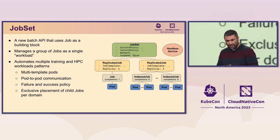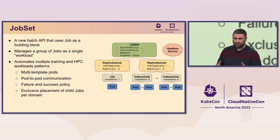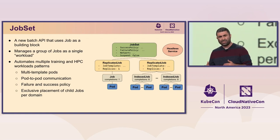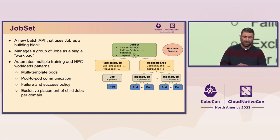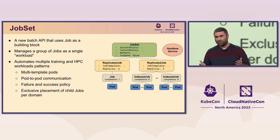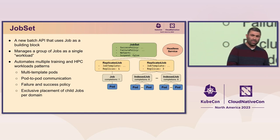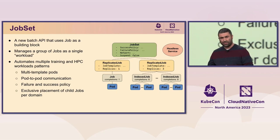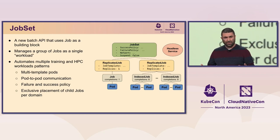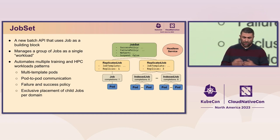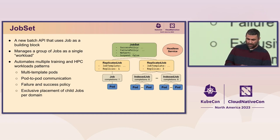In general, what it tries to do is automate multiple patterns we've discovered in training and HPC type workloads. As I mentioned: multi-template jobs, setting up part-to-part communication. With indexed job, you used to create an index job and then manually create a headless service, set up everything, and clean it up manually. With JobSet, we're trying to automate these things.